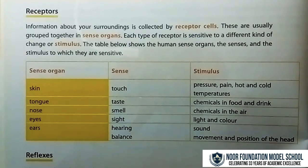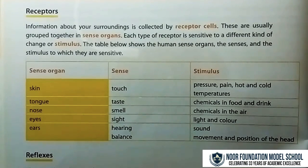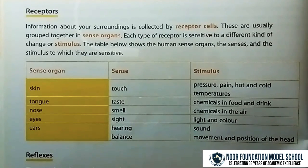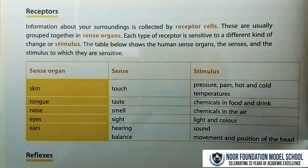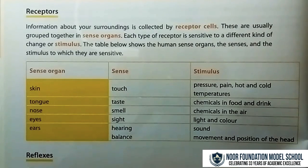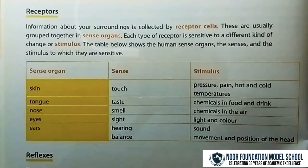The skin is the sense organ for touch, with stimuli being pressure, pain, hot and cold temperatures. The tongue is the sense organ for taste, with stimulus being chemicals in food and drink. The nose is the sense organ for smell, with stimulus being chemicals in the air.